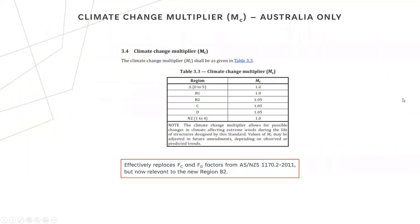The climate change multiplier is an Australia-only thing for regions B2, C, and D. It effectively replaces the F_C and F_D factors present in the 2011 version, but is now relevant to region B2 rather than just C and D.